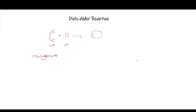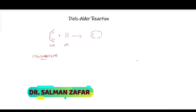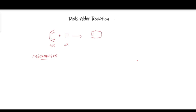The Diels-Alder reaction is a cycloaddition reaction and according to Woodward-Hoffmann rules it is known as a 4+2 cycloaddition reaction. The reaction takes place between a diene, which has a conjugated system, and a dienophile. A dienophile is usually an alkene — the term 'dienophile' means diene-loving. So the dienophile reacts with the diene to produce a cyclohexene ring.